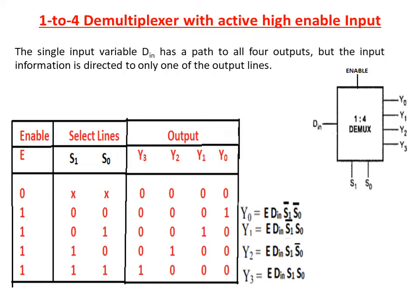The 1 to 4 D-multiplexor with active high enable input. The enable input is here. These are the selection lines, single input line D and the 4 outputs Y0, Y1, Y2, Y3. This is the block diagram representation. In the truth table, when the enable input is 0, whatever combination is present in the selection lines, the output of the D-multiplexor is 0. That is, when the enable input is 0, the D-multiplexor is deactivated.